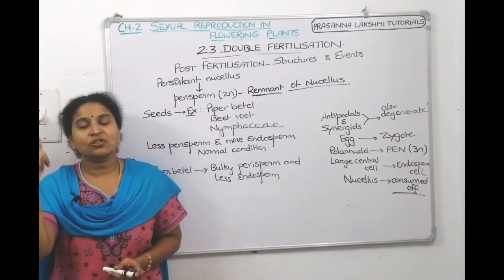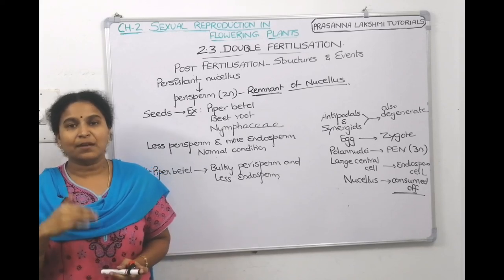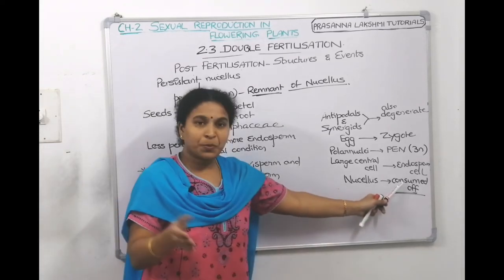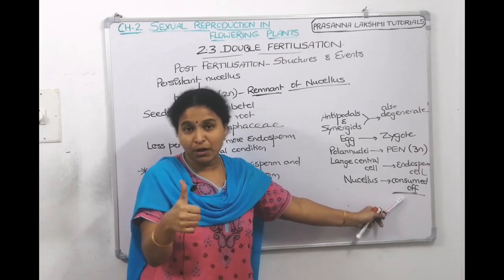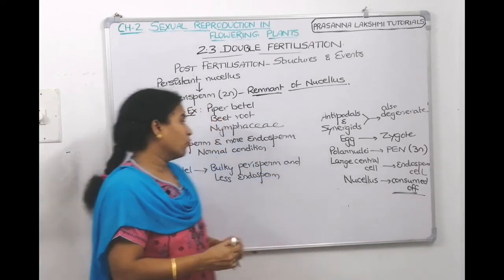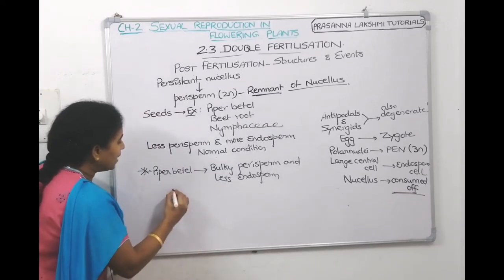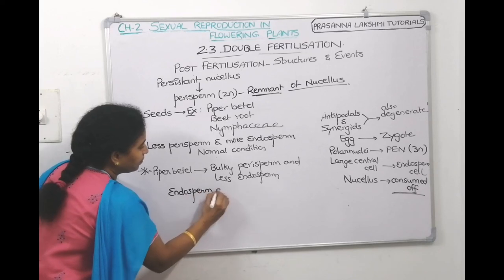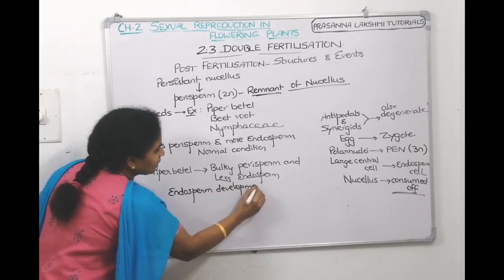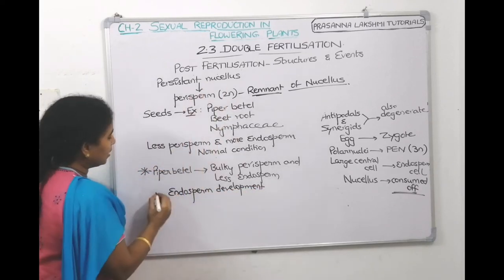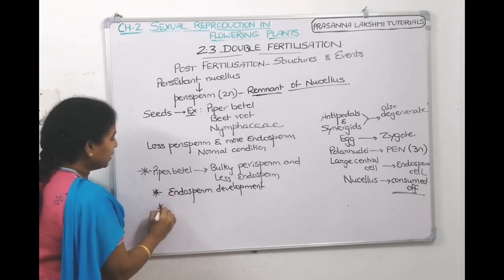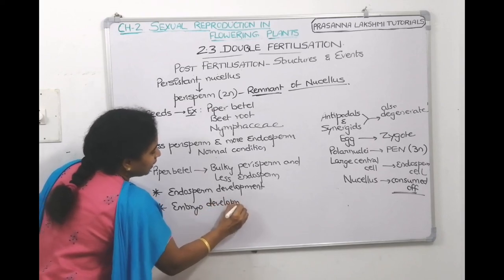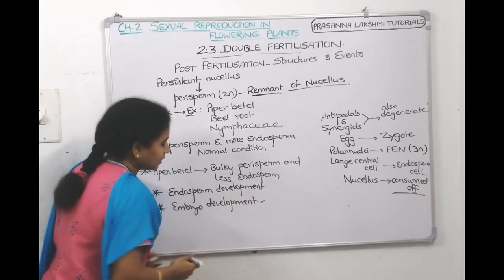So this is about today's session — we discussed double fertilization and post-fertilization events. In the next session we will discuss how the endosperm tissue will be formed and how the zygote develops into an embryo. The main events under post-fertilization are endosperm development and embryo development.